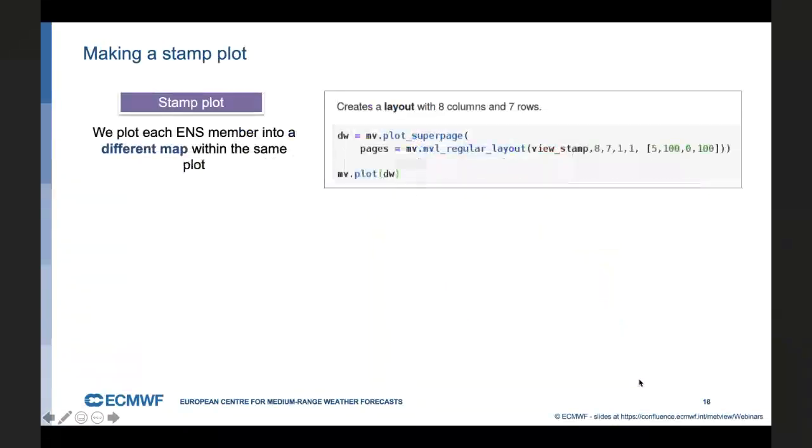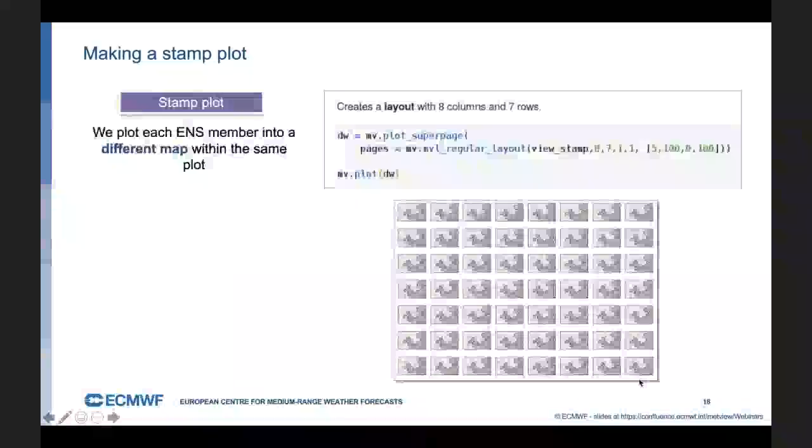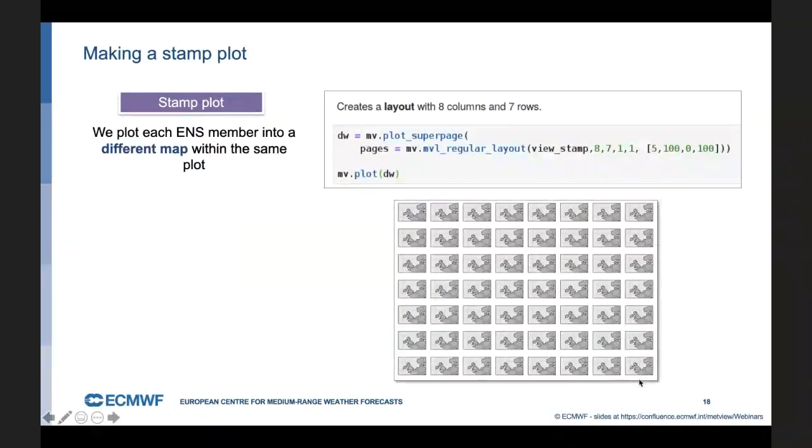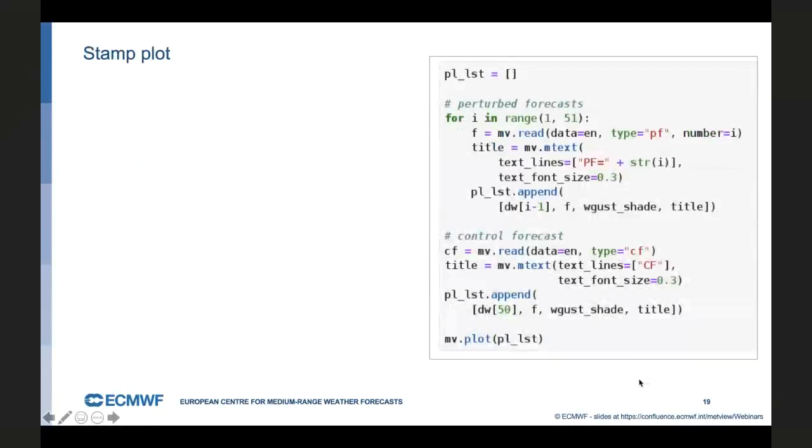Now one way of looking at the uncertainty in ensemble forecast is to use a stem plot. The stem plot is a simple plot where each ensemble member is rendered into a different map, but within the same plot. So we have 51 members in this case. We need a big enough layout for it. And we use the plot_superpage command to build a layout with eight columns and seven rows. We plot it. It really looks like a nice plot collection. Now that's just an empty plot. We need to put data into it. This is the code for it.